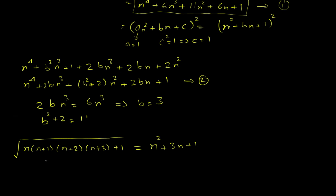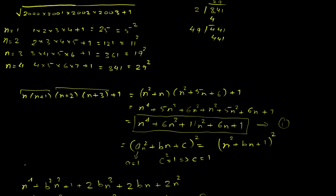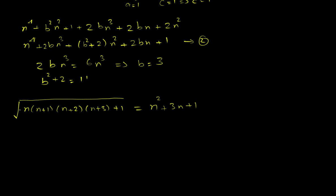Now coming to the original problem, we need to solve this for n equal to 2000. So the answer is 2000 squared plus 3 times 2000 plus 1, which equals 4,000,000 plus 6,000 plus 1, giving us 4,006,001.